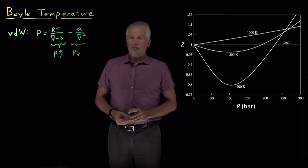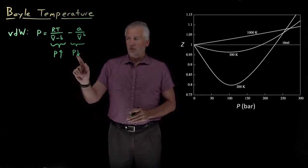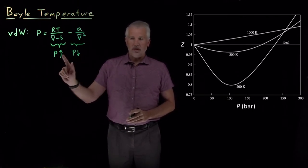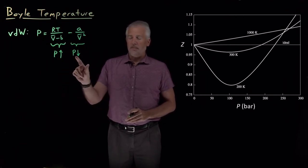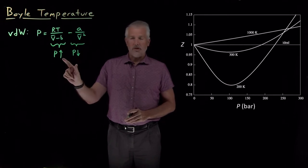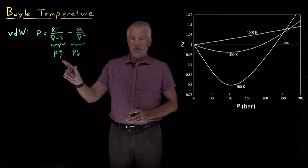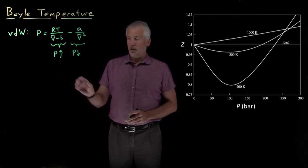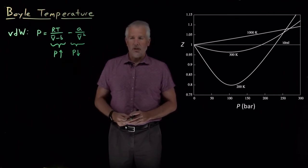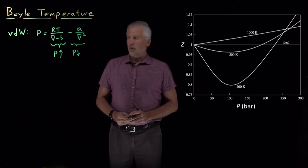So we can sometimes run into a situation where those two corrections from the attractive interactions and from the size of the molecules cancel each other out. If the correction that reduces the pressure happens to exactly cancel the correction that increases the pressure, then the ideal gas law is doing a coincidentally extra good job under those conditions. That's what we're interested in exploring now.